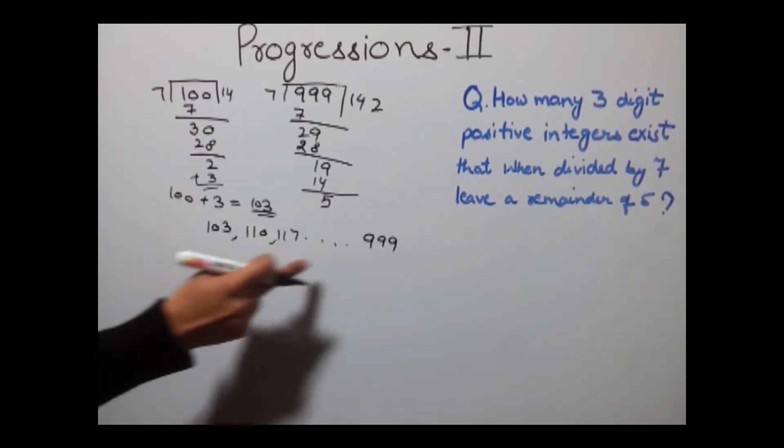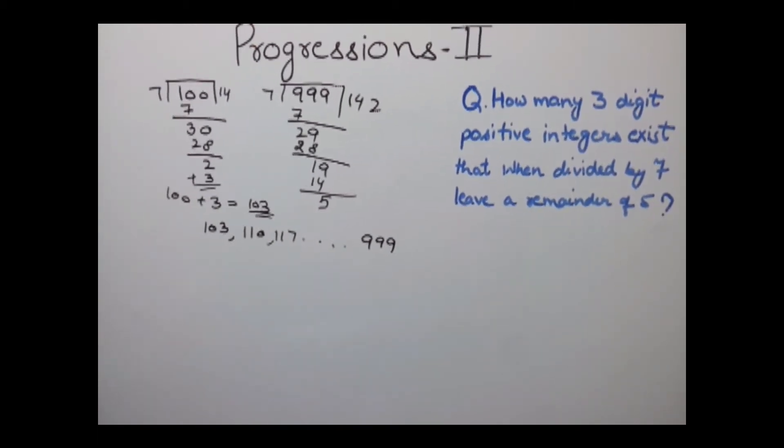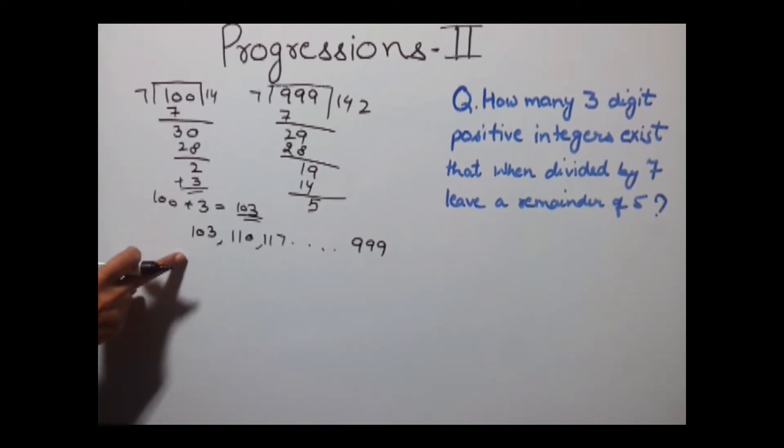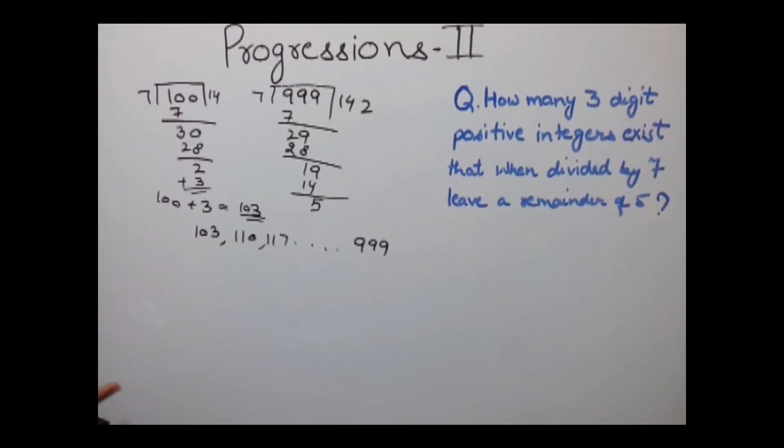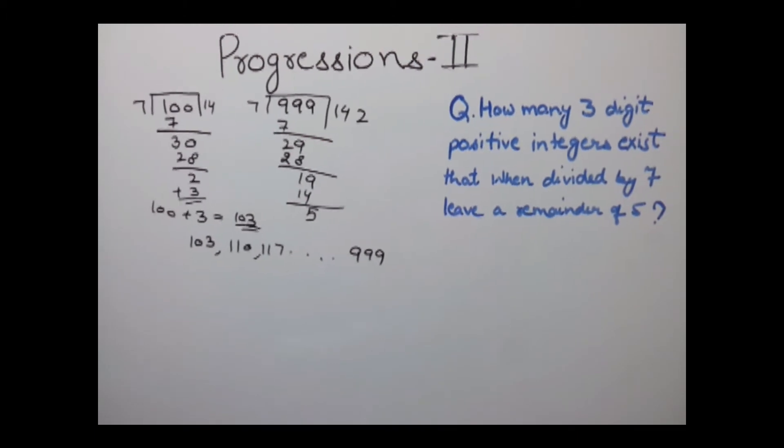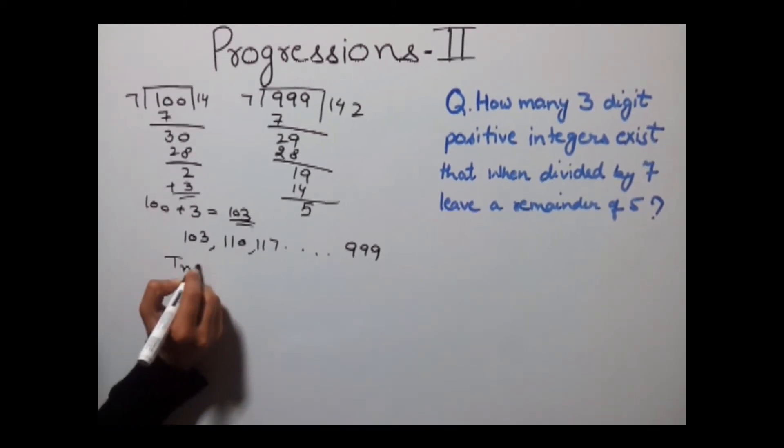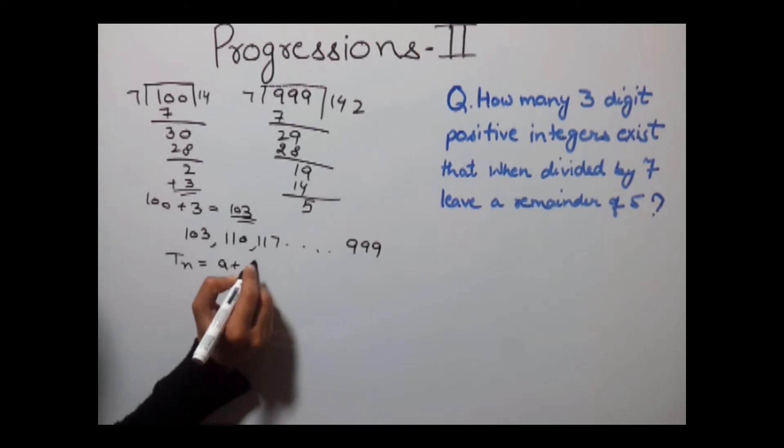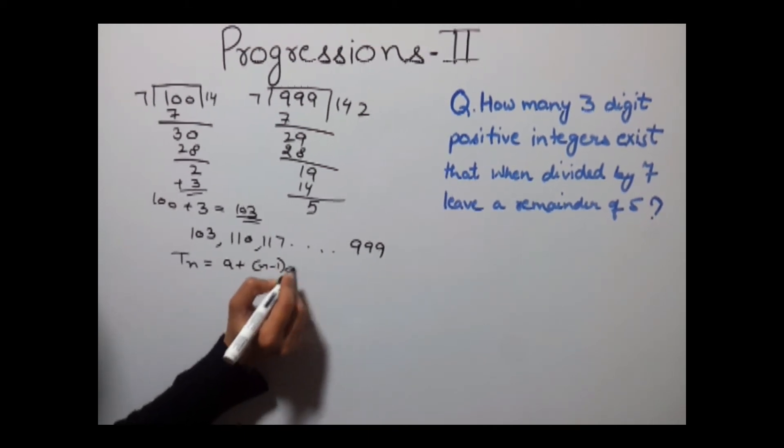Now we need to find the total number of numbers, and we know this is an AP because the common difference is the same. The formula to calculate the nth term in AP is Tn = a + (n-1)×d.